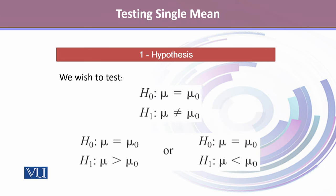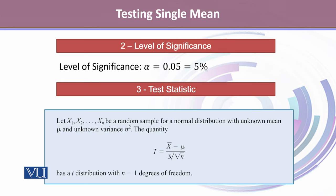When testing a single population mean, we test H0: mu equals mu0 against the alternative that mu is not equal to mu0 — this is a two-tailed test. One can also carry out a one-tailed test, where H0: mu equals mu0 (or mu ≤ mu0) against the alternative that mu is greater than mu0. Alternatively, H0: mu equals mu0 against the alternative that mu is less than mu0.